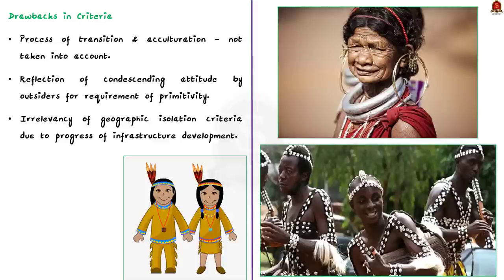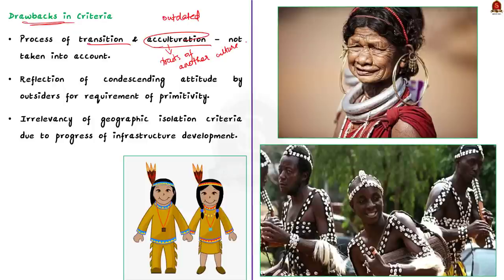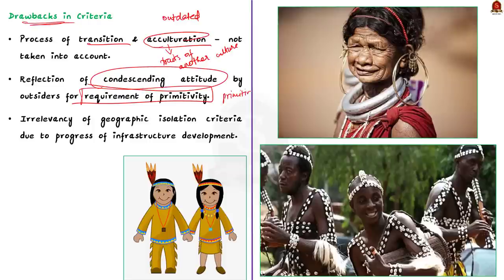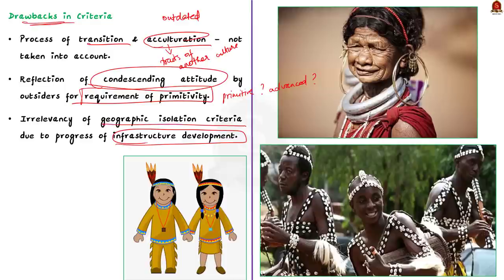Firstly, these criteria are said to be outdated because of the process of transition and acculturation — the process of borrowing traits from another culture. There is a lot of interaction happening between tribes and the outside population, so when tribes are adopting and transitioning, the distinctive culture criteria becomes irrelevant. Secondly, the requirement of primitivity shows a condescending attitude by outsiders — when you call someone primitive, it implies you are calling yourself advanced. Primitivity is a very relative term, and this criteria gives a sense that tribes are considered inferior. Thirdly, infrastructure development has reached every nook and corner of the country, so the geographical isolation criteria also becomes very irrelevant.